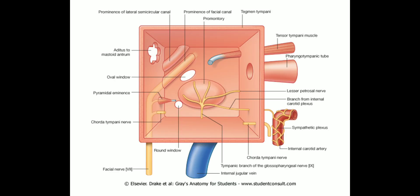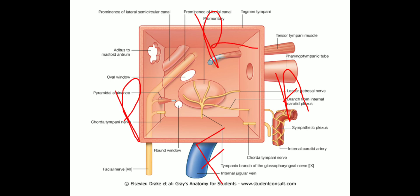The middle ear is like a box with six sides — six walls: anterior wall, posterior wall, roof, floor, medial wall, and the lateral wall is the tympanic membrane, which is not shown here. When the inflammation extends beyond the middle ear or it involves structures like the facial nerve, it is called a complication.